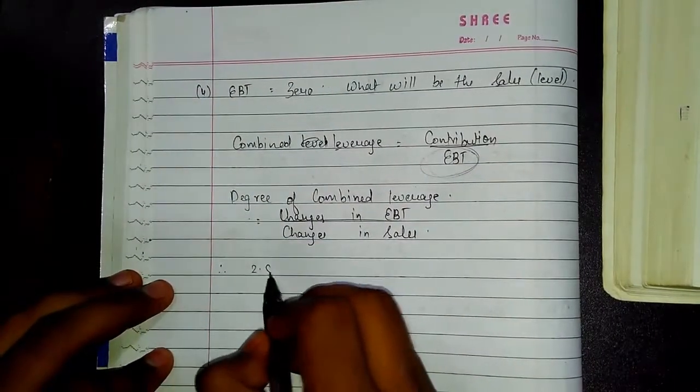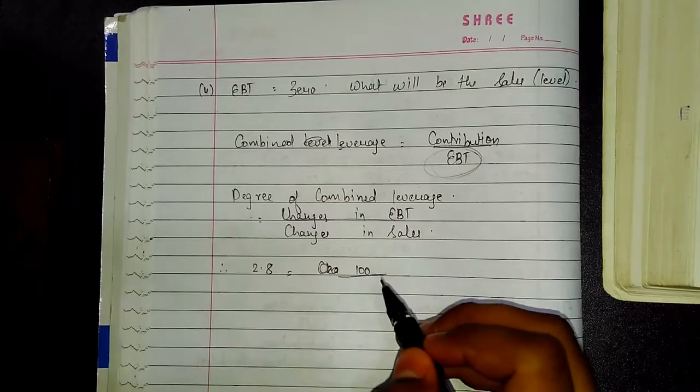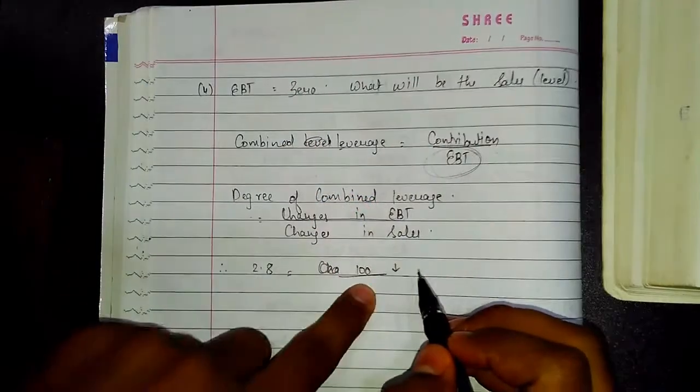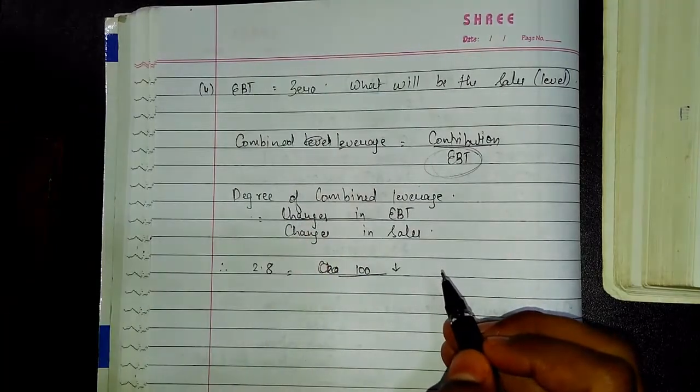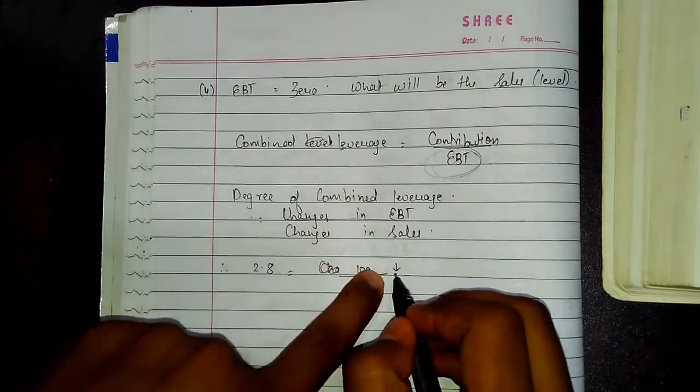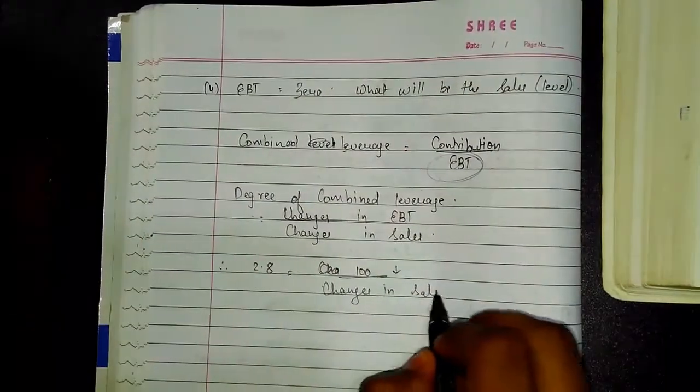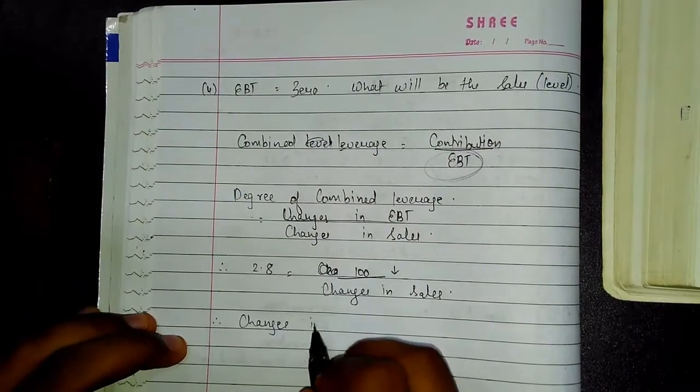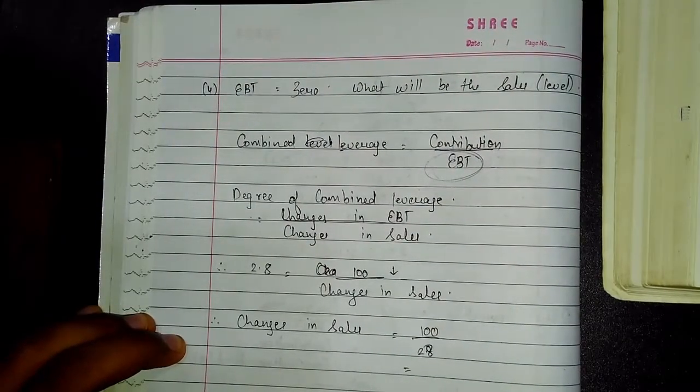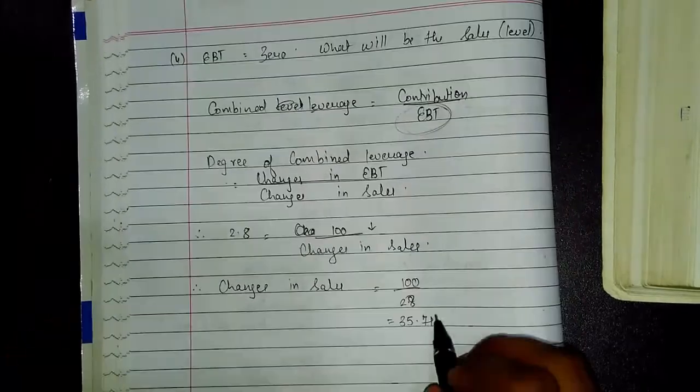Therefore 2.8 equals changes in EBIT. In place of changes in EBIT you have to write 100 because the EBIT is going to decrease by 100%. So it is going to be 0. You can't write 0 here, you have to write the changes in EBIT. The change in EBIT is 100% decrease. Therefore changes in sales equals 100 divided by 2.8 which equals 35.71%.